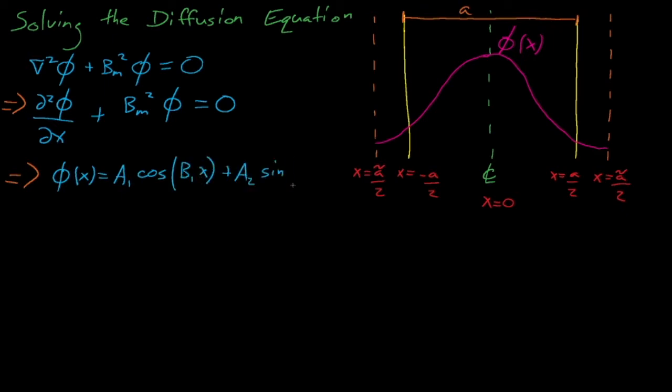You can probably guess that the b constants in this expression must equal the material buckling Bm, but we'll get to that in a few minutes. To solve for the a and b constants in this flux expression, we're going to need to introduce some boundary conditions.